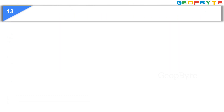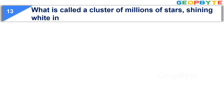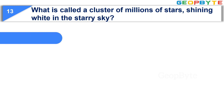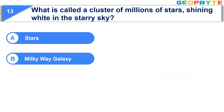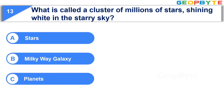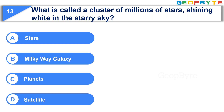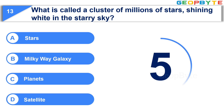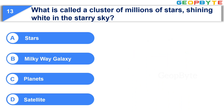The thirteenth question is: What is called a cluster of millions of stars shining white in the starry sky? Option A: Stars. Option B: Milky Way Galaxy. Option C: Planets. Option D: Satellite. Your time starts now. Your time is up and the correct answer is Option B: Milky Way Galaxy.